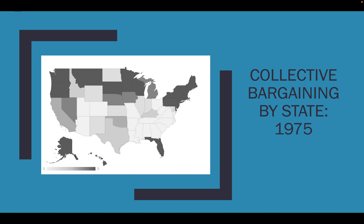In a matter of ten years, states really started to extend collective bargaining rights to public employees. Some of this was because of labor unrest in these professions — there were a lot of teacher strikes and local government employee strikes. The response, from both Republicans and Democrats, was granting collective bargaining rights to these groups so that they could negotiate at the table, not go on strike, and come to a negotiated agreement to keep some labor peace.